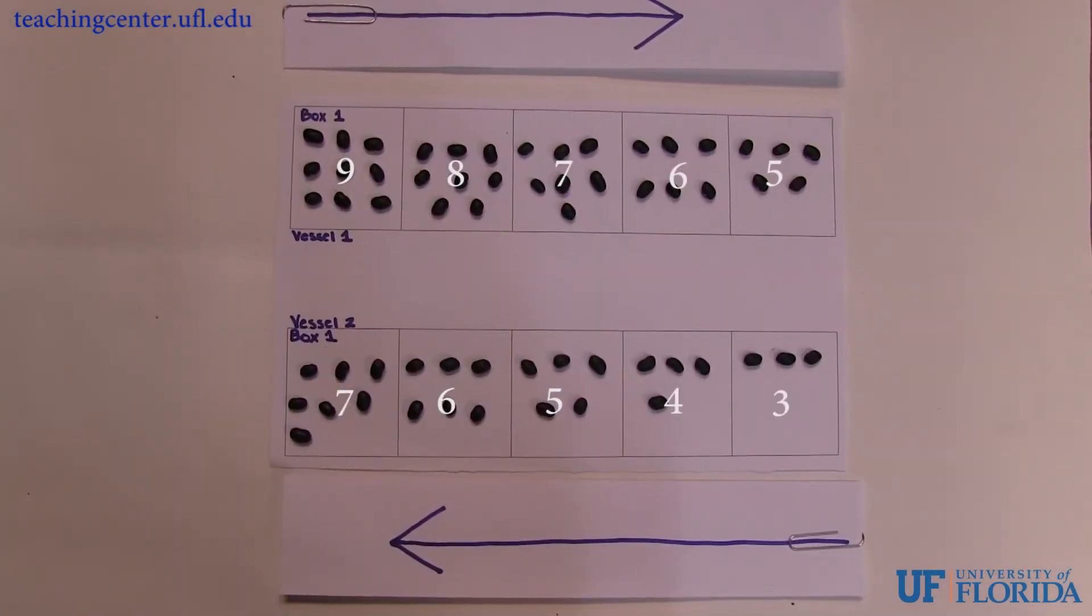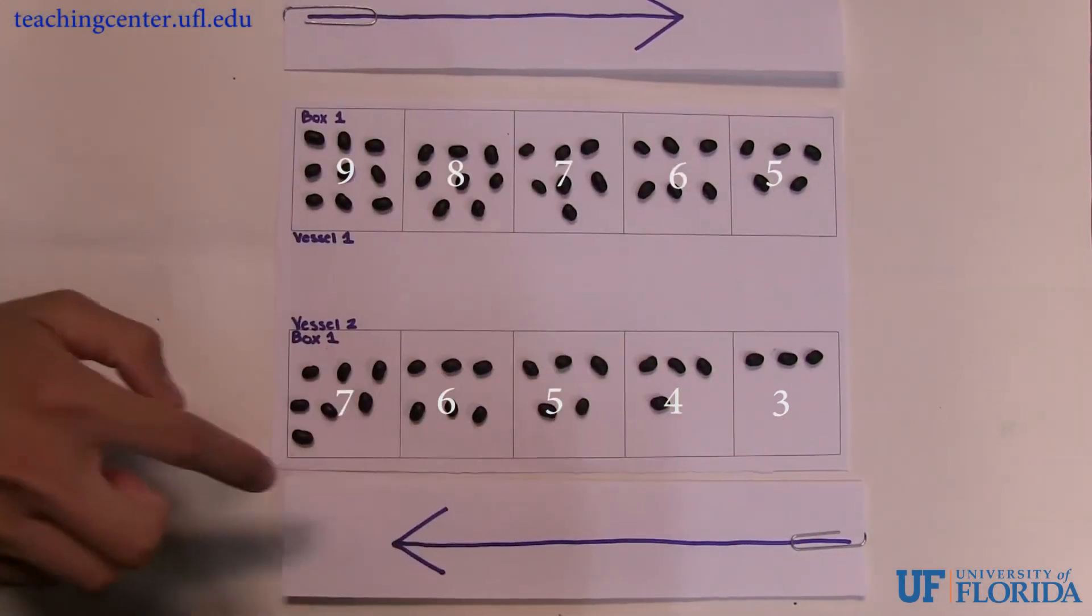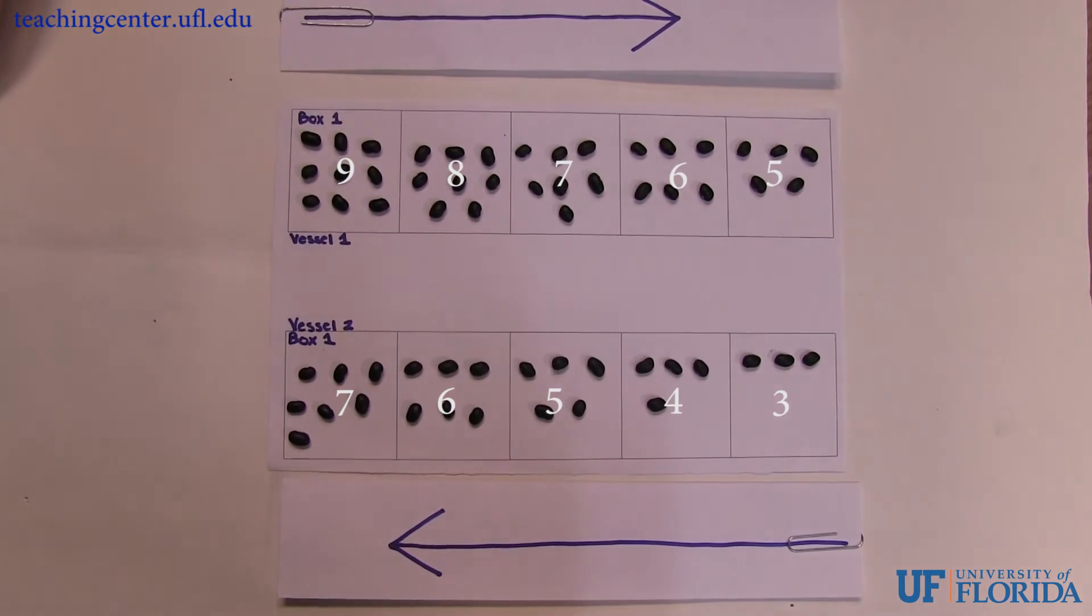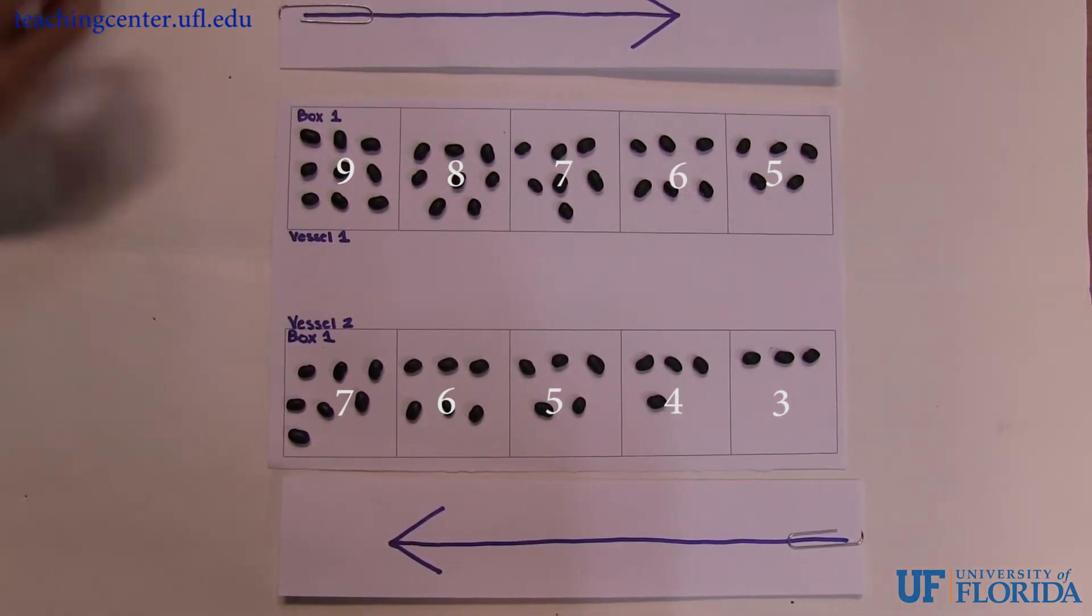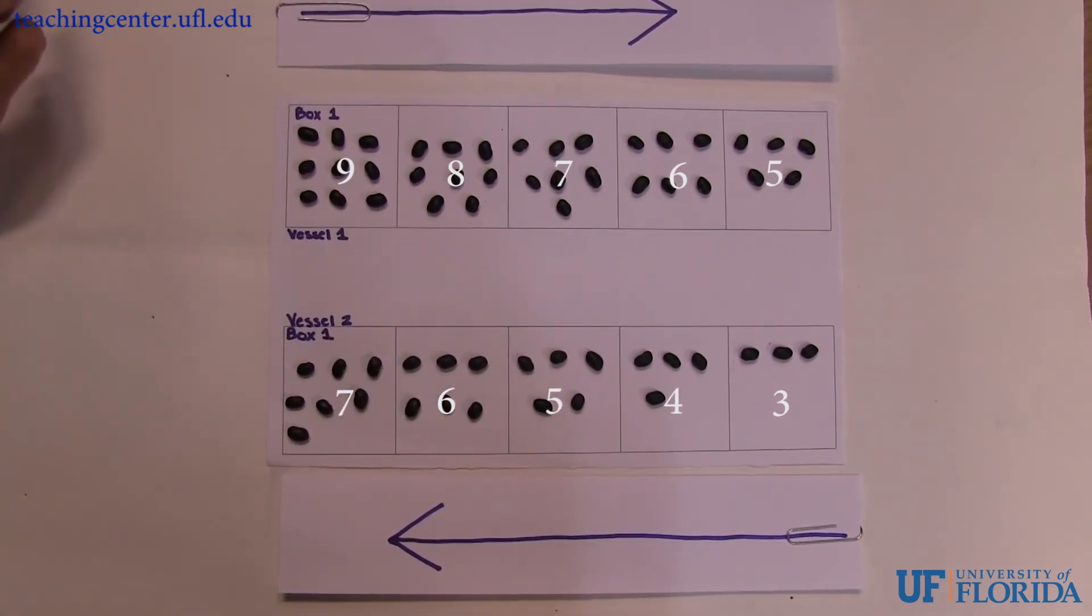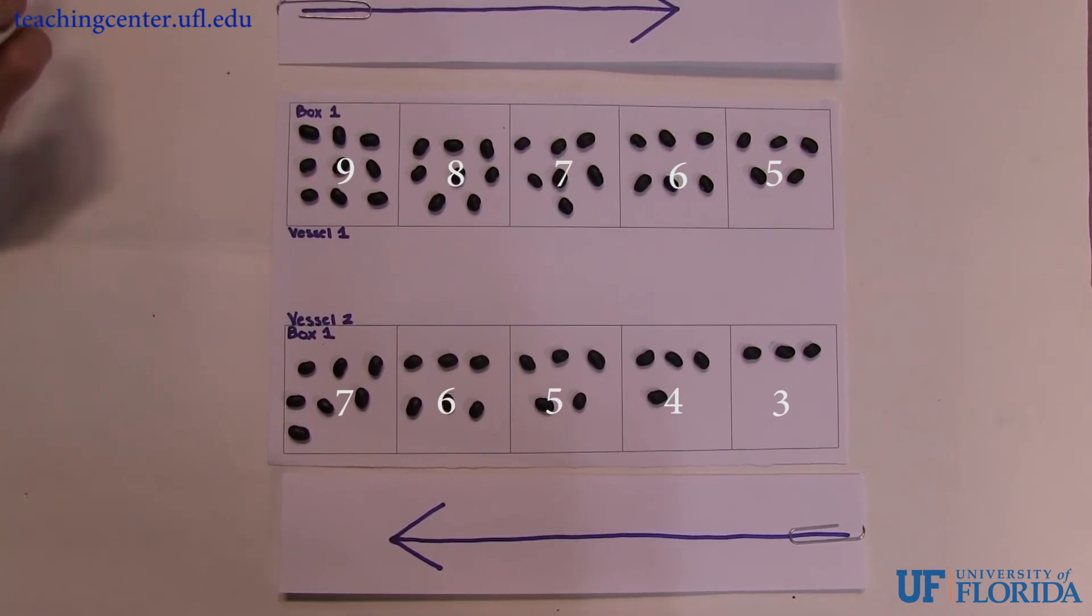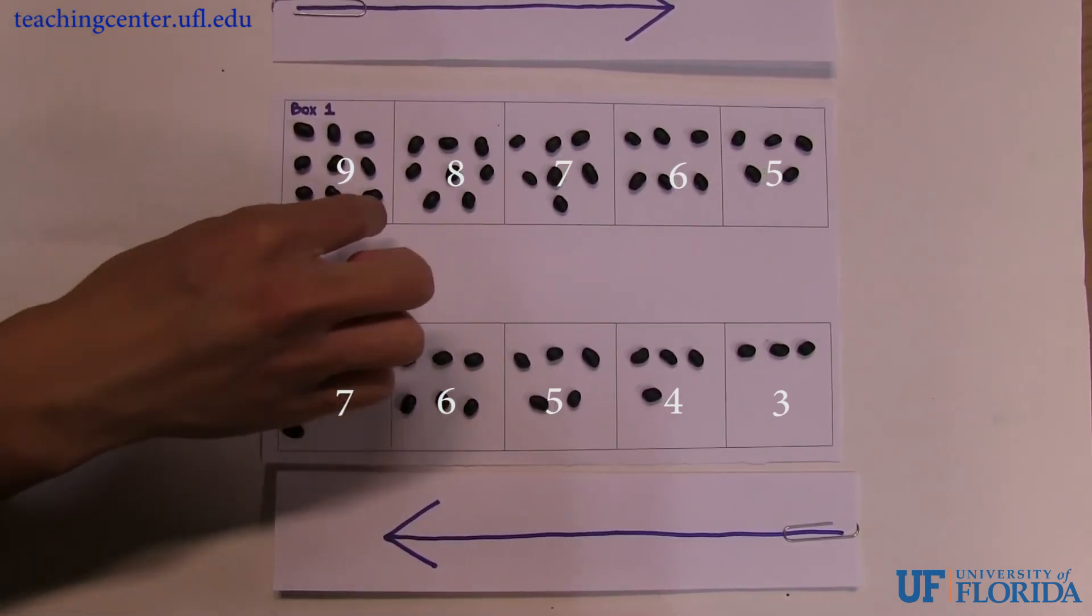In counter-current flow, we have vessel 1 and vessel 2 moving in opposite directions. This arrangement is optimal because it sets up a concentration gradient throughout the entire length of both vessels. As a result, bean transfer can occur throughout the entire length of the vessel, with 1 bean transferring from each box.